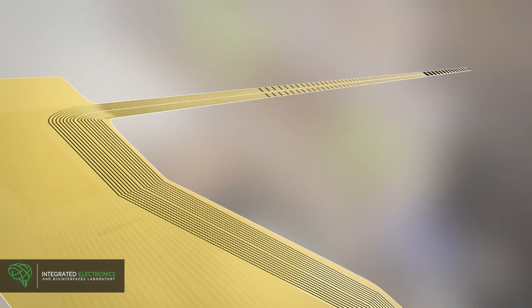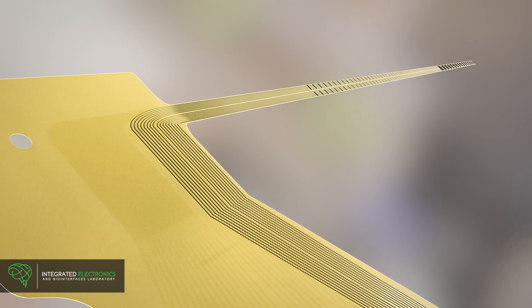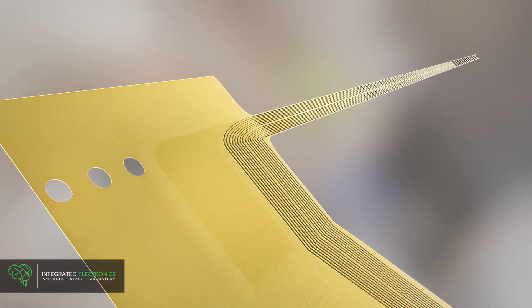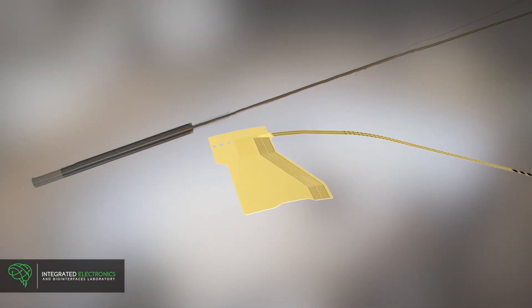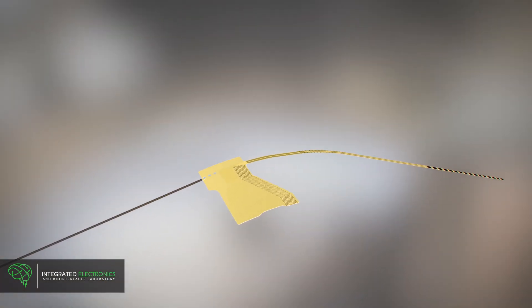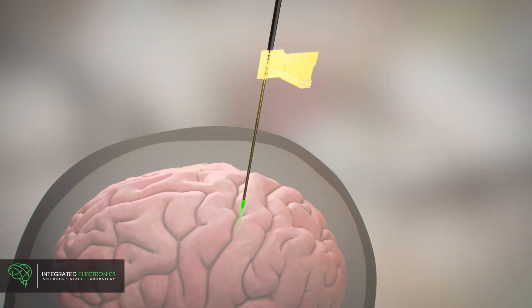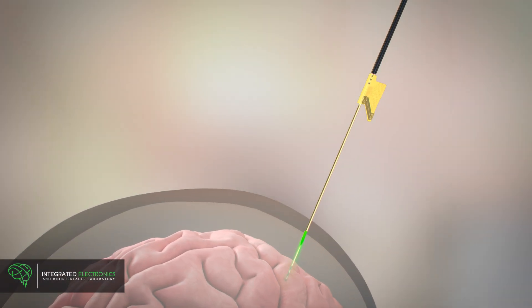It rivals the mechanical stability of today's bulkier clinical electrodes, enabling its use for monitoring and treatment of epilepsy and deep brain stimulation. To implant it, a stylet is inserted between the electrode's polyimide layers, making it temporarily rigid to be compatible with current surgical and clinical protocols.